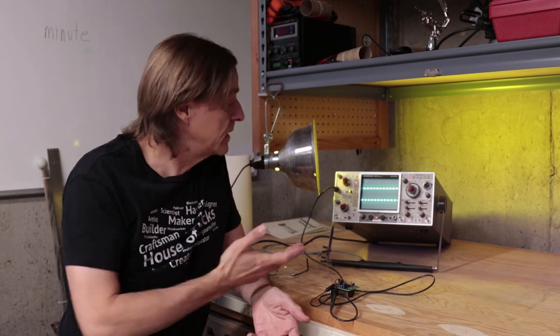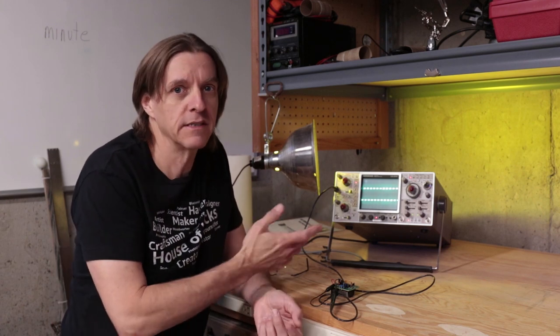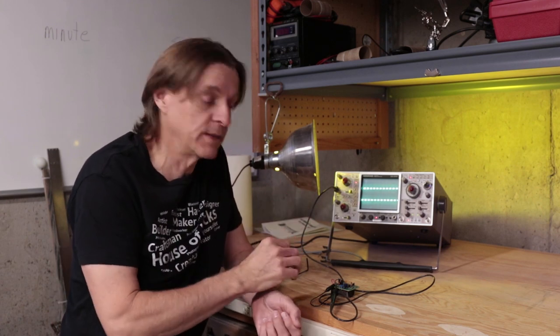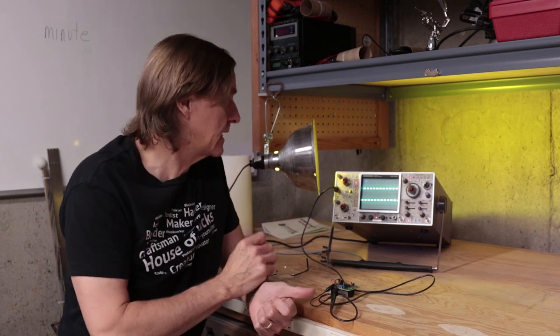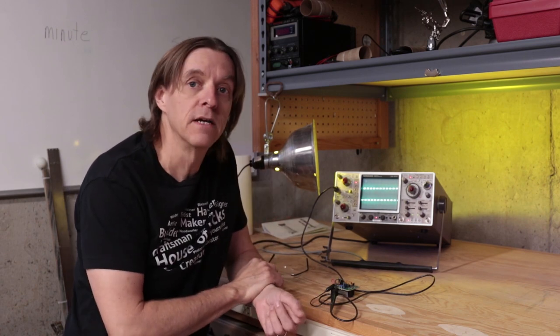I found a 9-volt battery, pulled the oscilloscope out, got it warmed up. This is an old CRT one so it takes a little bit to warm up. And got everything connected and we can see we have a fairly nice square wave here.